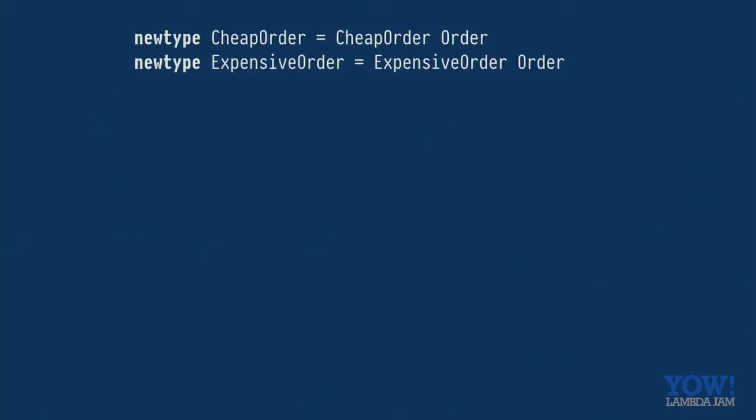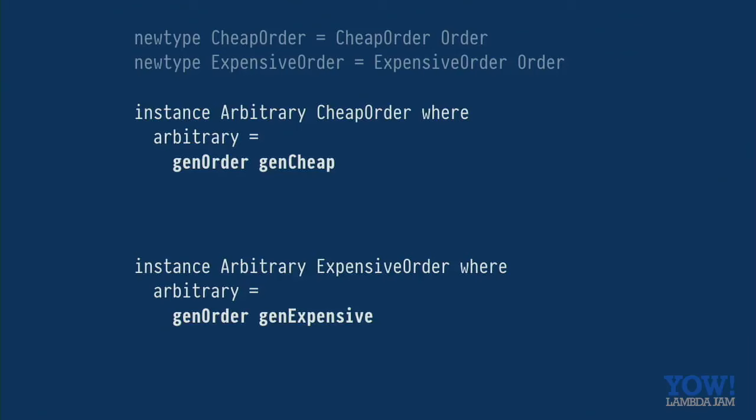But, if we come along to arbitrary, it's a type class, so we need to newtype orders in order to generate, in order to have different arbitrary instances for them. So that works great for our generators, but how do we implement shrink? I mean, we would have to go all the way down into the order and make sure that we only shrink and stay within the invariants of the cheap and expensive things. And, to be honest, I'm not really sure how I'd implement that. It's really pretty challenging, I think.